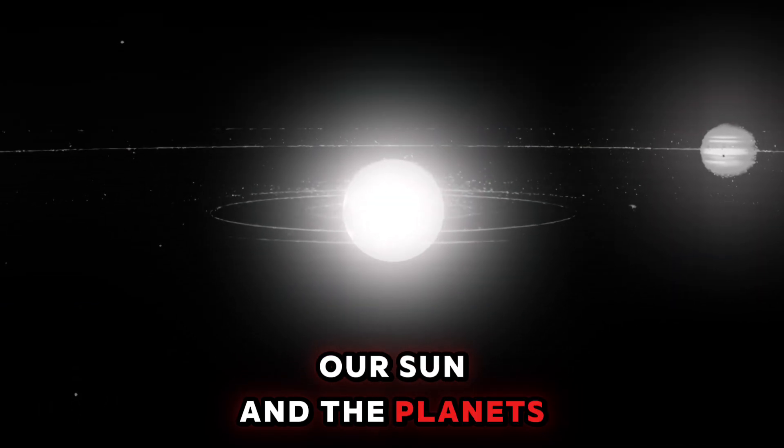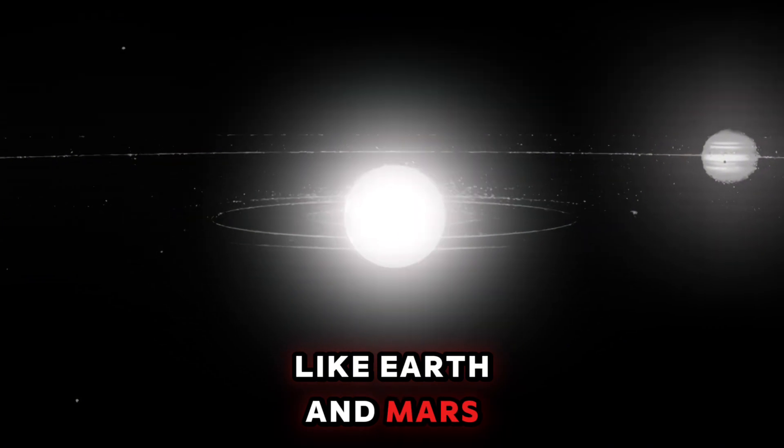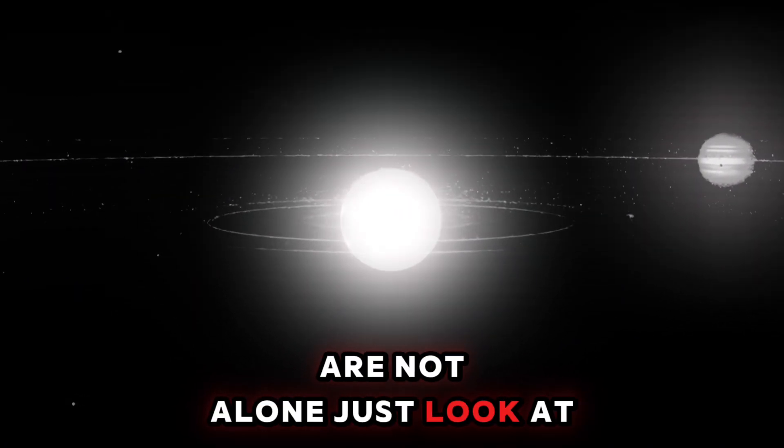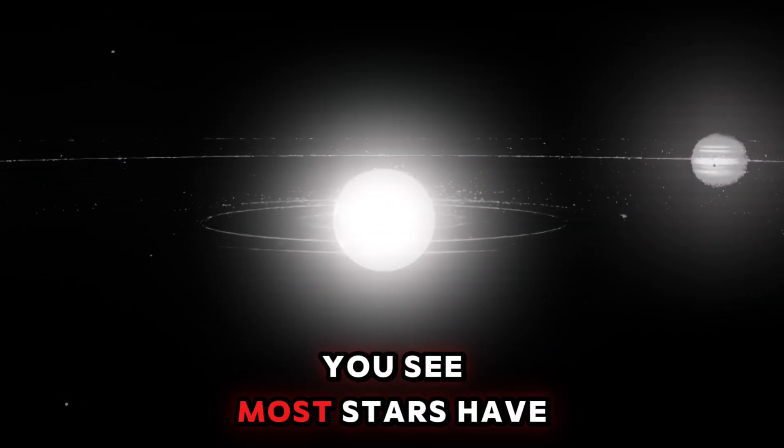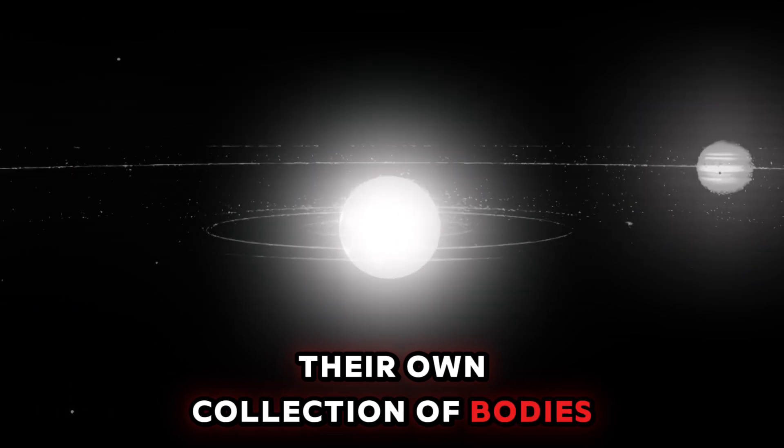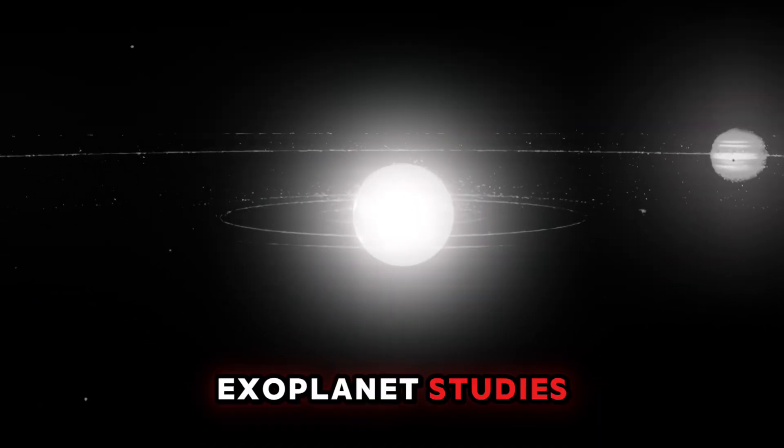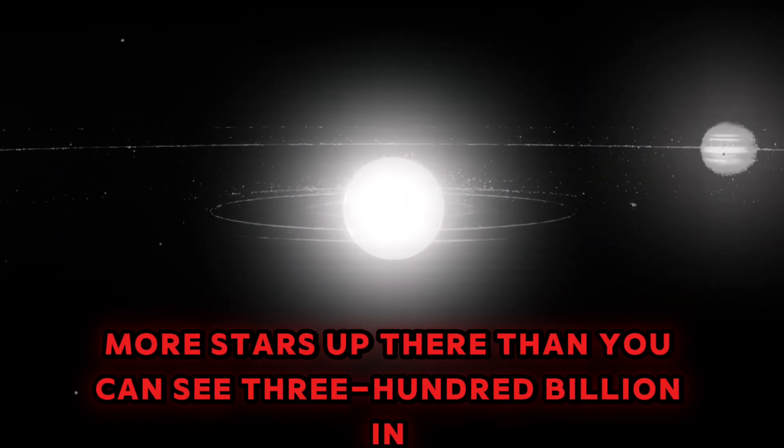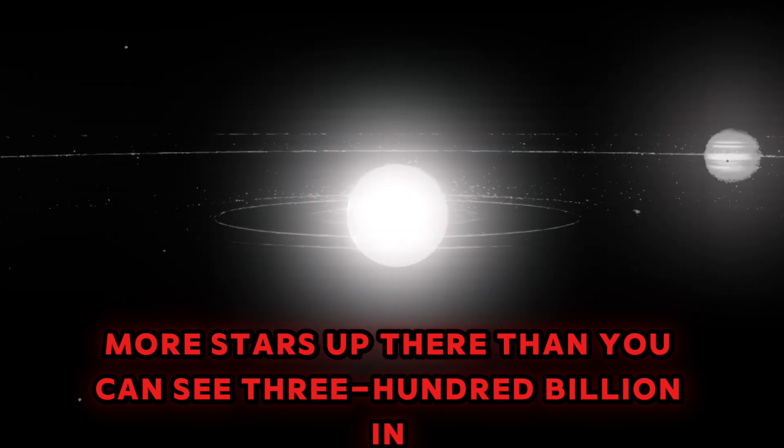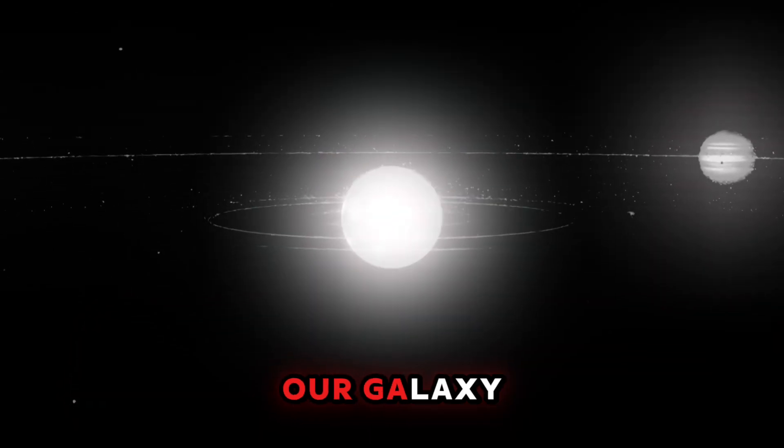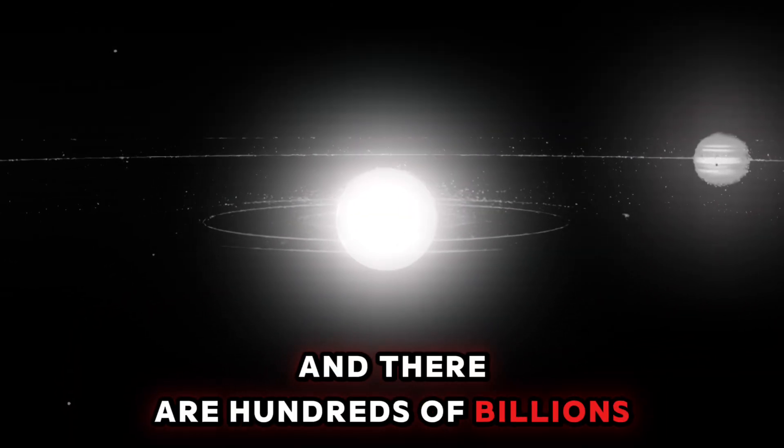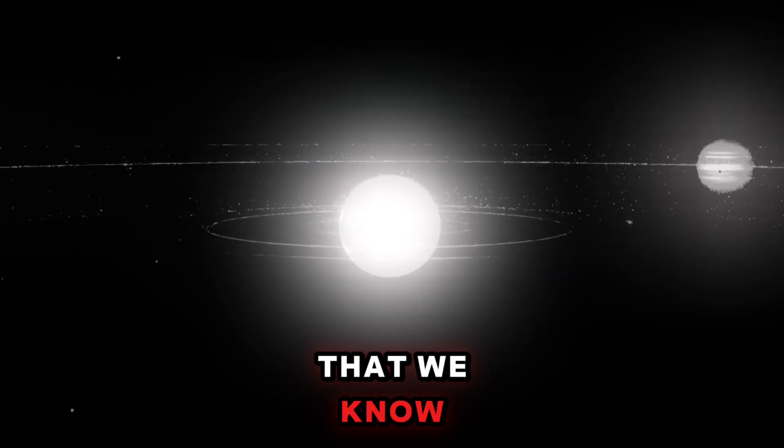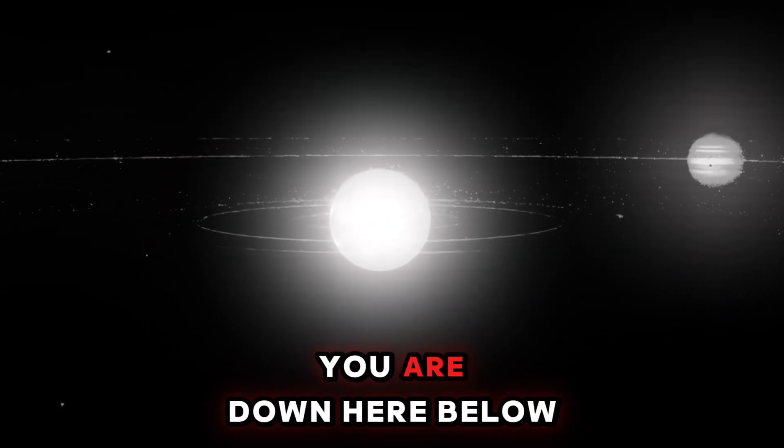Our sun and the planets like Earth and Mars are not alone—just look at the stars. You see, most stars have their own collection of bodies. That is what the search for exoplanets studies. There are far more stars up there than you can see—300 billion in our galaxy. And there are hundreds of billions of galaxies that we know. So think about how small you are down here below.